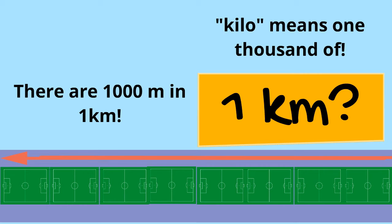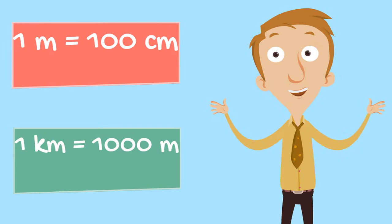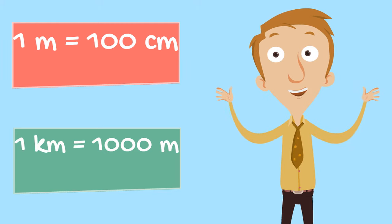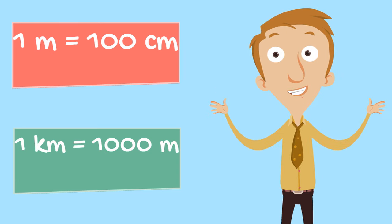Or, if you can picture how big a football pitch is, one kilometre is ten football pitches in a big long row — that's so many pitches they don't even fit onto this screen. So, one metre is equal to one hundred centimetres and one kilometre is equal to one thousand metres. Remember that — that's a very important fact for today.